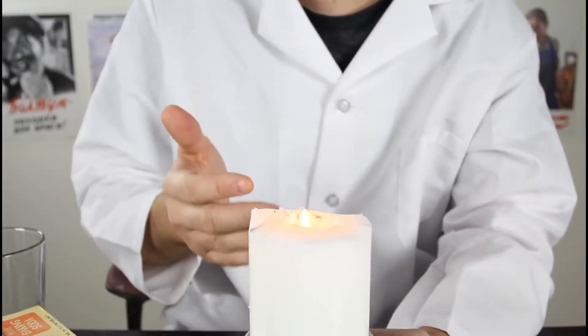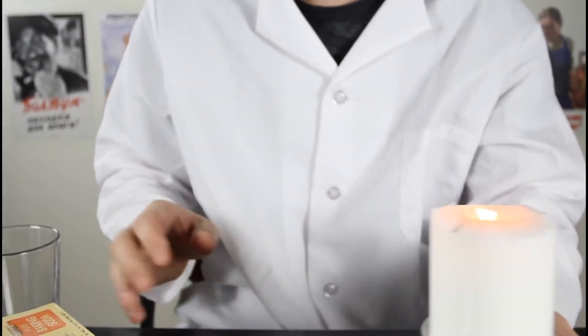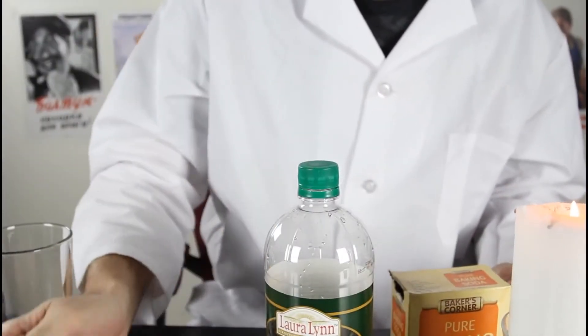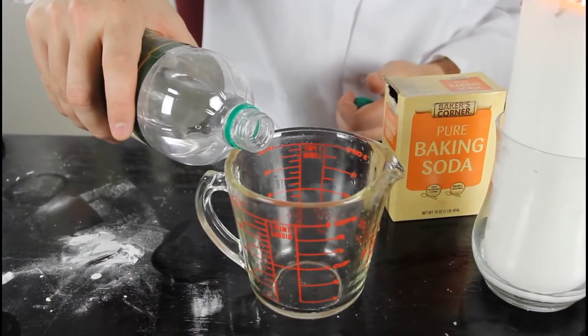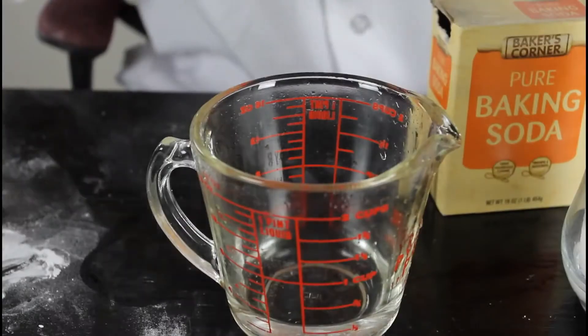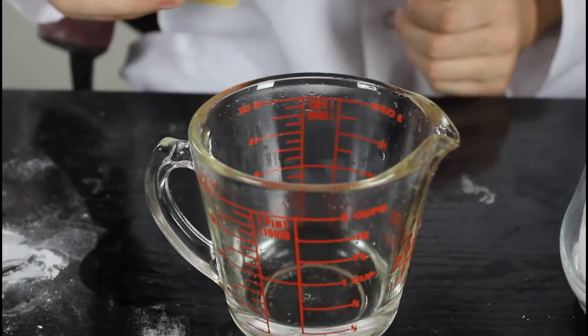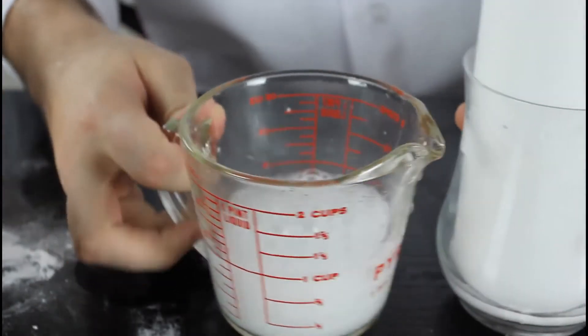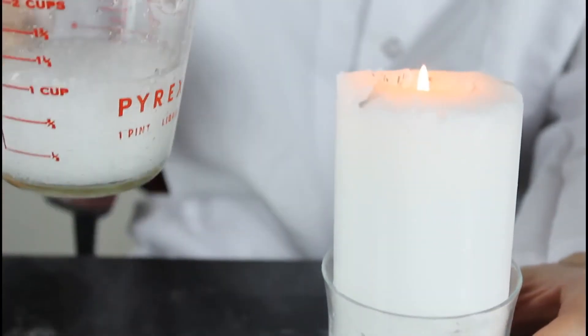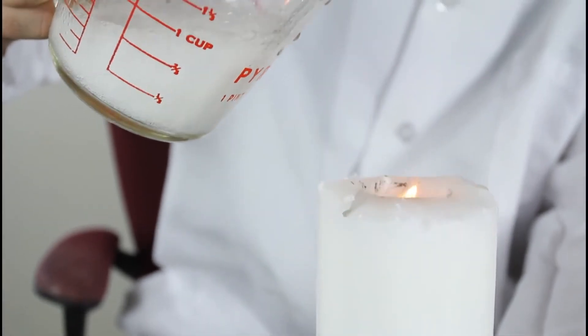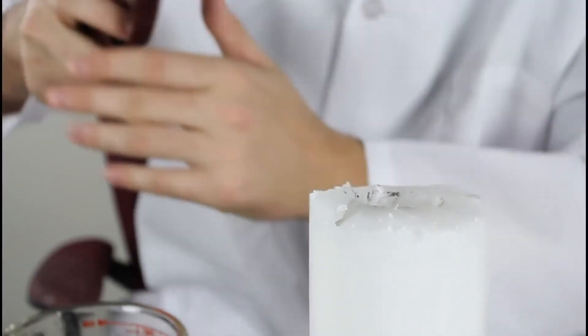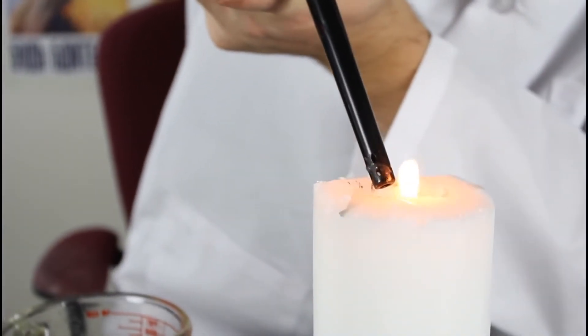This experiment we're gonna need a candle, it's already on fire as you can see. Baking soda, vinegar and a glass. First we're gonna put vinegar in a glass, half a cup will be enough. Then put some baking soda on top of it. And then grab this baking soda and pour it on a candle. Check out, it turns off the candle. Why does that happen? So let's try this again.